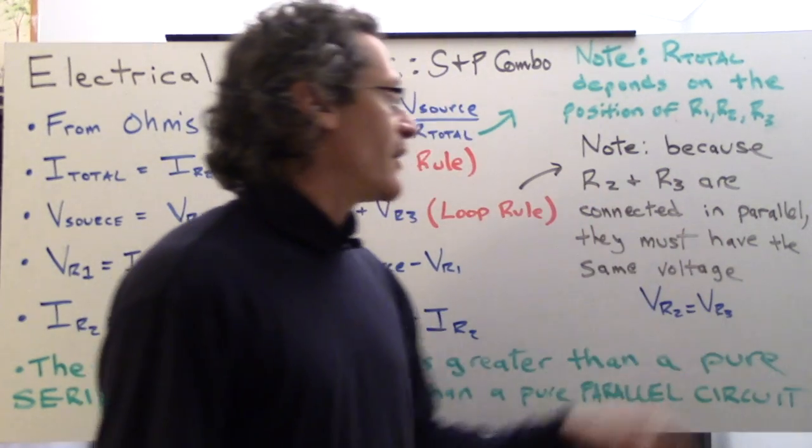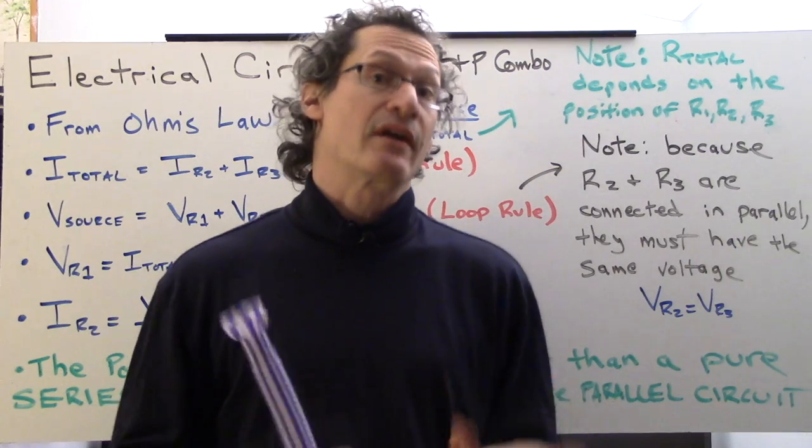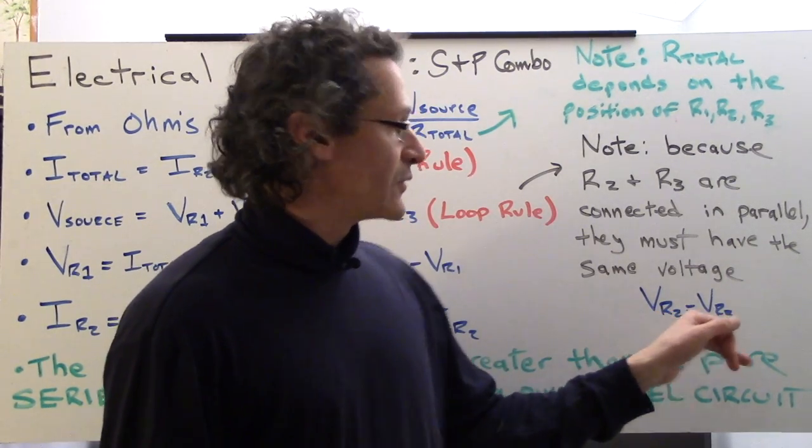R2 and R3 are connected in parallel. Therefore, they have the same voltage. By definition, anything connected in parallel will share the same voltage, same voltage drop on it. So V R2 equals V R3.